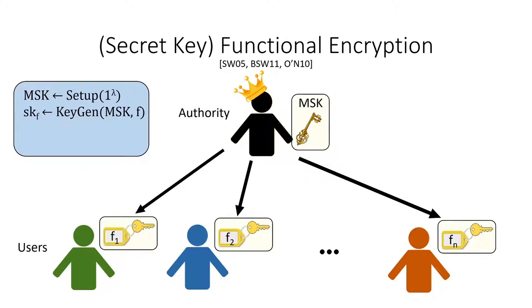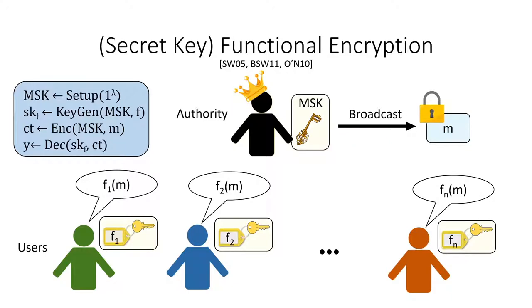I'll start by defining functional encryption. Here I define secret key FE, but our work also extends to public key FE. In a functional encryption scheme, an authority wishes to allow users to learn functions of some encrypted input and know no other information about the input. More formally, an authority with a master secret key can generate function keys for specific functions, which can then be handed out to different users. Then, using the master secret key, the authority can encrypt some message m. Correctness holds if a user with a function key for function f and a ciphertext for message m can compute f of m.